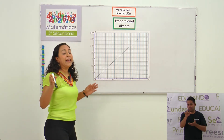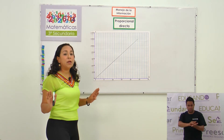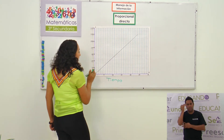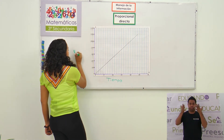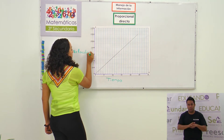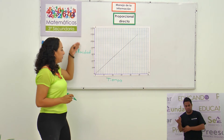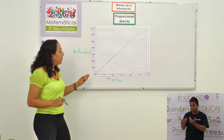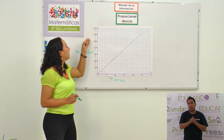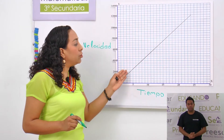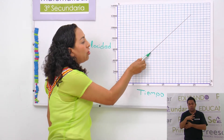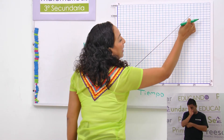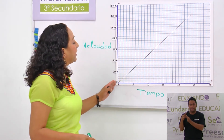La coordenada cero, cero es cuando el avión está estacionado, cuando no tiene ningún movimiento. Conforme va avanzando el tiempo, la velocidad es mayor. Tiempo en el eje de las abscisas, velocidad en el eje de las ordenadas. Conforme va avanzando el tiempo, va aumentando la velocidad. Es una función lineal que en el manejo de la información tiene una proporcionalidad directa. Es constante y se llama así.